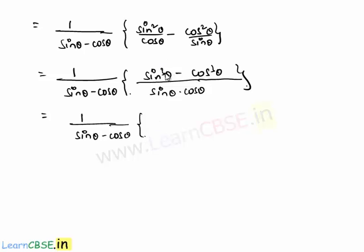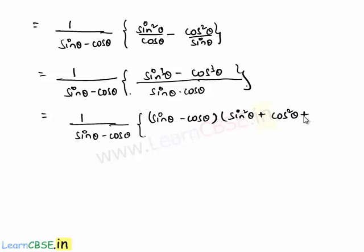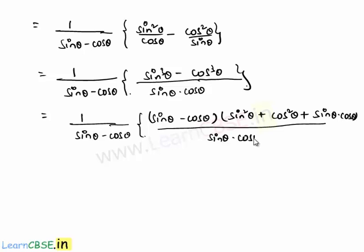This is in the form of a cubed minus b cubed, which can be written as a minus b — that is sine theta minus cos theta — into a squared, that is sine squared theta, plus b squared which is nothing but cos squared theta, plus a times b, that is sine theta into cos theta. All whole divided by the denominator which remains the same, that is sine theta into cos theta.